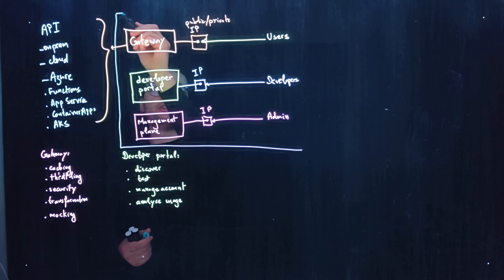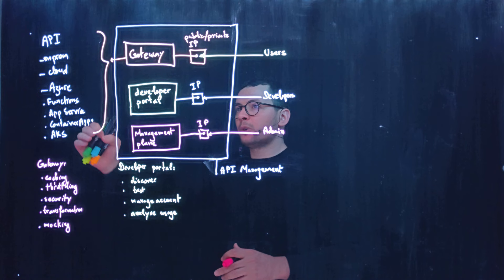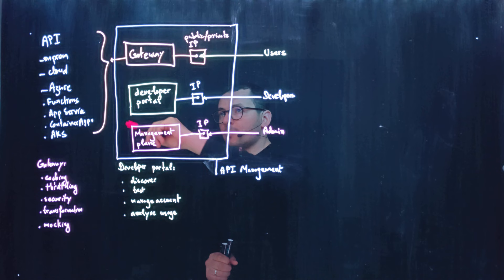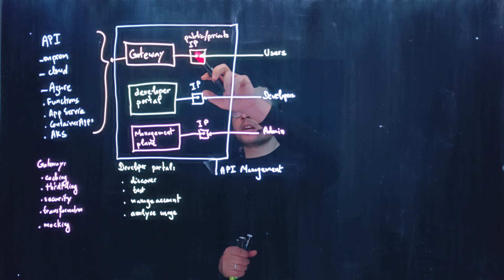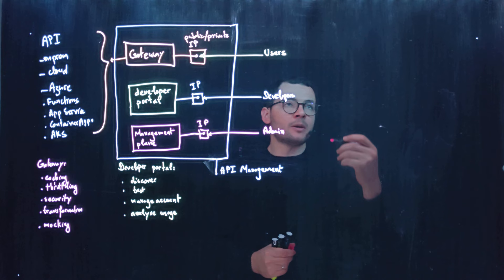Let's look at the networking options for Azure API Management. Azure API Management is typically used to expose your services or endpoints through the gateway, allowing your users to access those services. That gateway can be exposed through a public or a private IP address. When you create an API management instance, you will be asked whether you want to attach it to a virtual network or not.